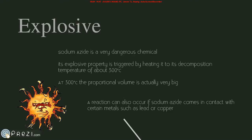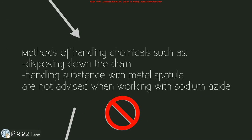I'll start by talking about its explosive property first. Sodium azide can be decomposed when it reaches its decomposition temperature of around 300 degrees Celsius, causing the nitrogen gas to erupt instantly. If we bring back the gas law equation, we can see that at 300 degrees, the volume of nitrogen gas will be very large in proportion to that temperature. An explosive reaction can also occur when sodium azide comes in contact with specific metals such as lead and copper. Common lab methods such as disposing sodium azide down the drain or holding it on a metal spatula are not advised. Pouring it down the drain may cause it to contact metals inside drain networks and cause an explosion, and you should avoid the spatula simply because it is metal.